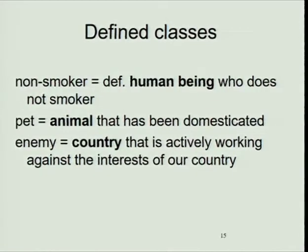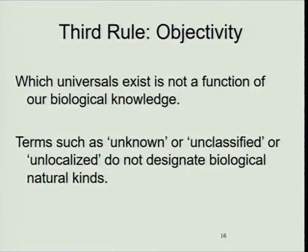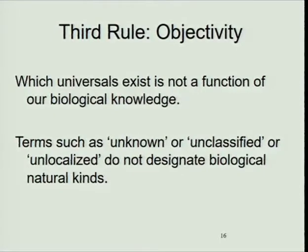In each case, a defined class is a restriction on a universal. In philosophy, people talk about a façon de parler — there are no sakes in the world, but there is a way of speaking which seems to quantify over sakes. If you suppose that sakes really exist, you'll be making a mistake. Similarly, if you suppose that pets are entities separate from animals, then you will be making a mistake.